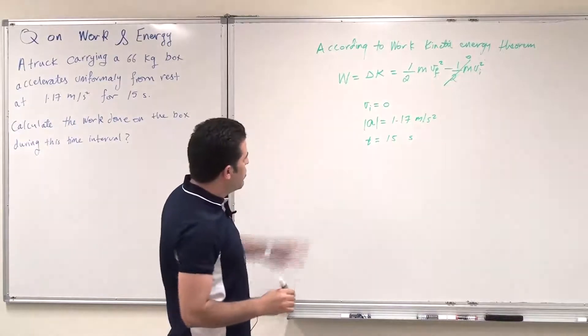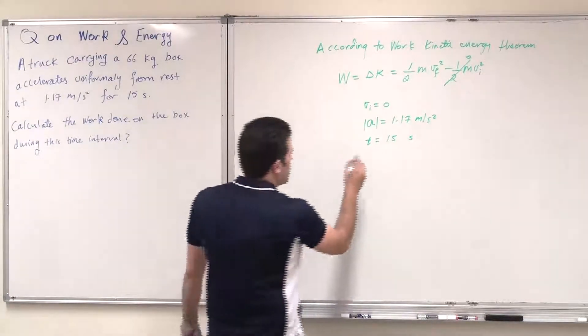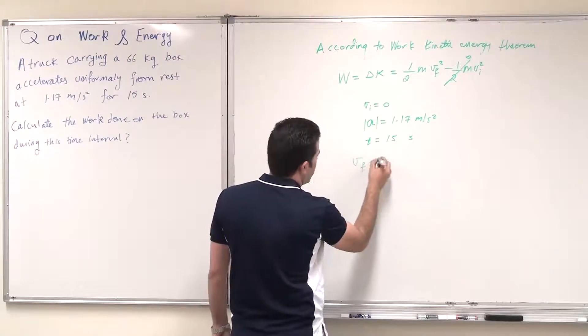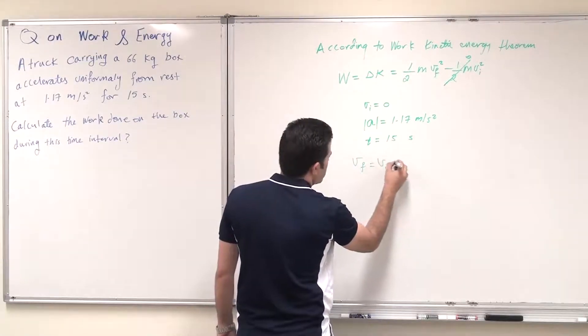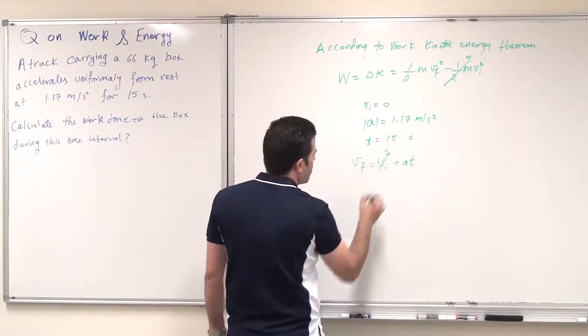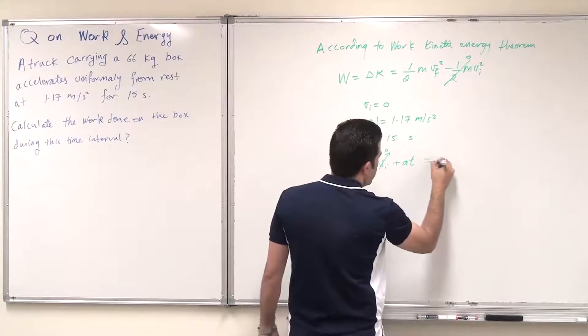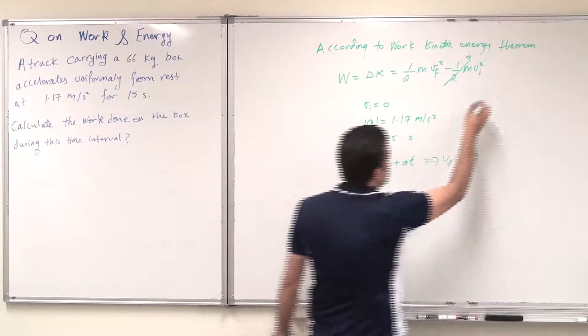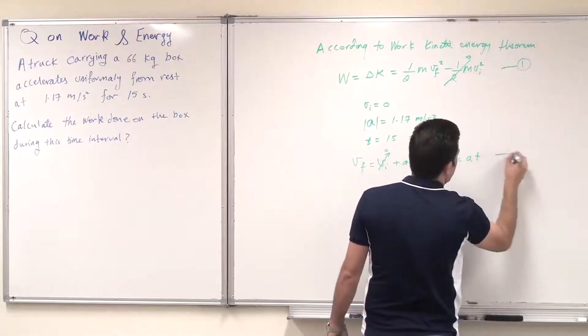So we can use this information since the simplest equation of motion, v final equals v initial plus a t. And since v initial equals zero, so v final equals a t, then we can substitute this. Let me call this 1, call this 2.